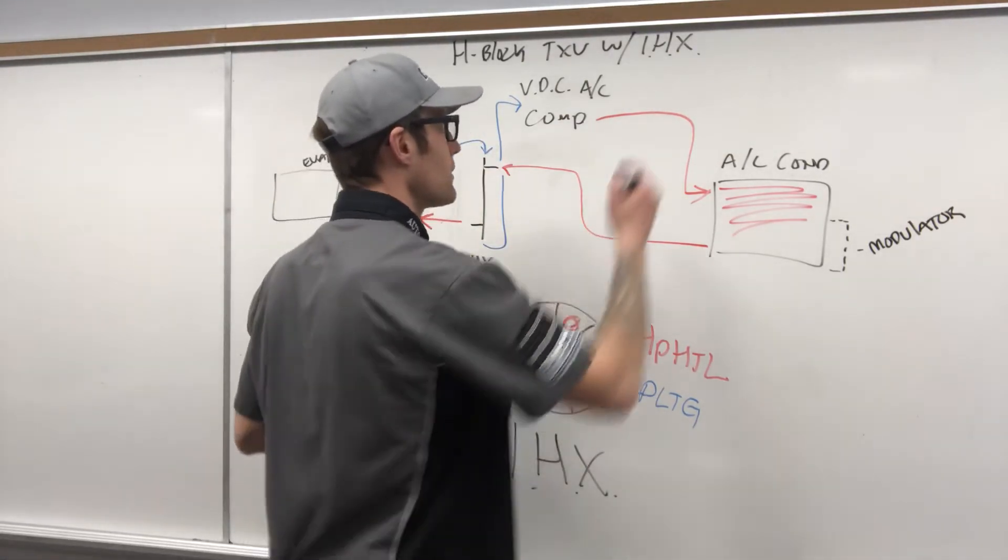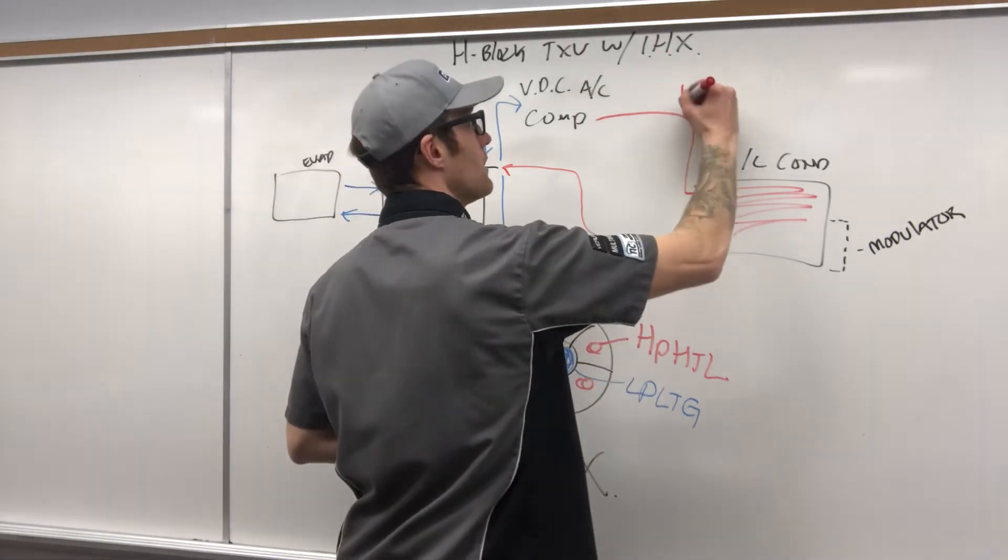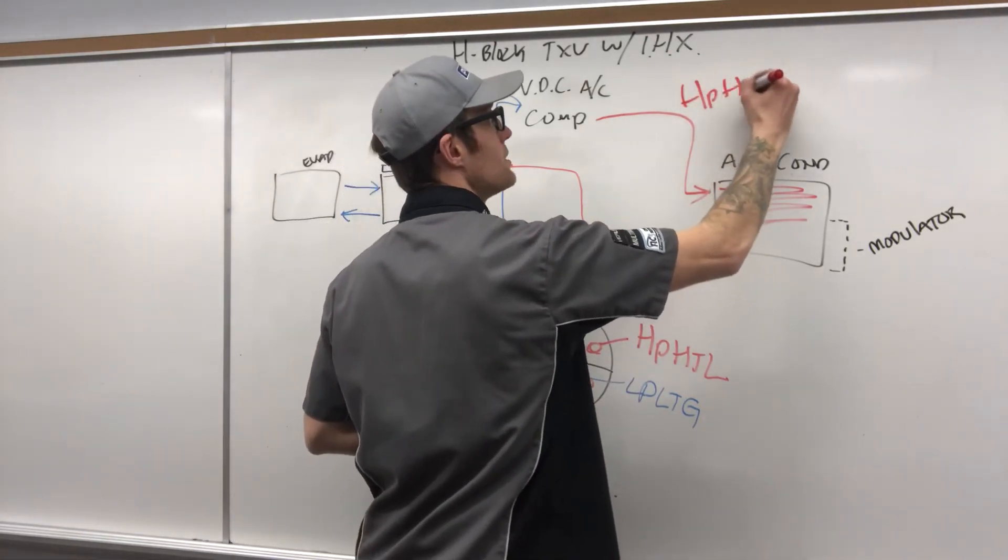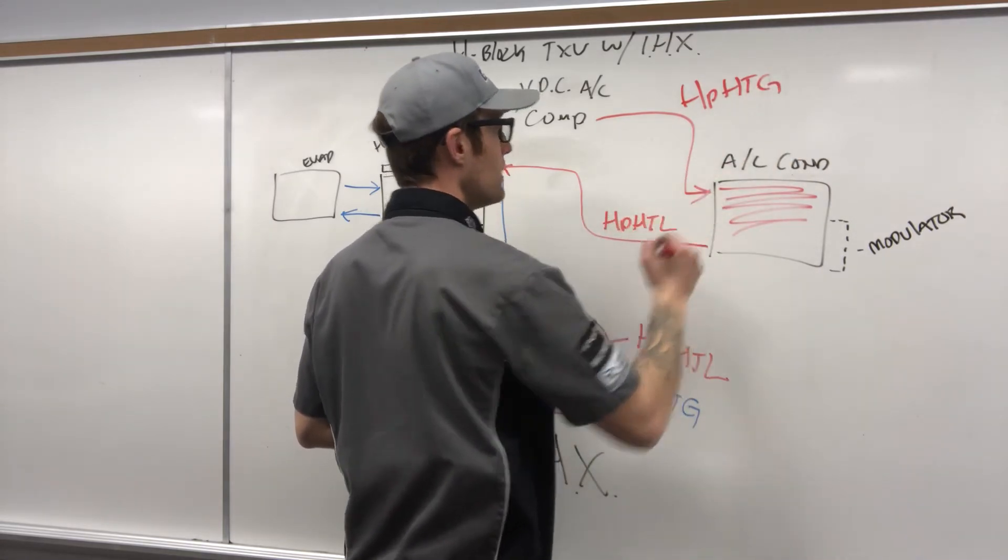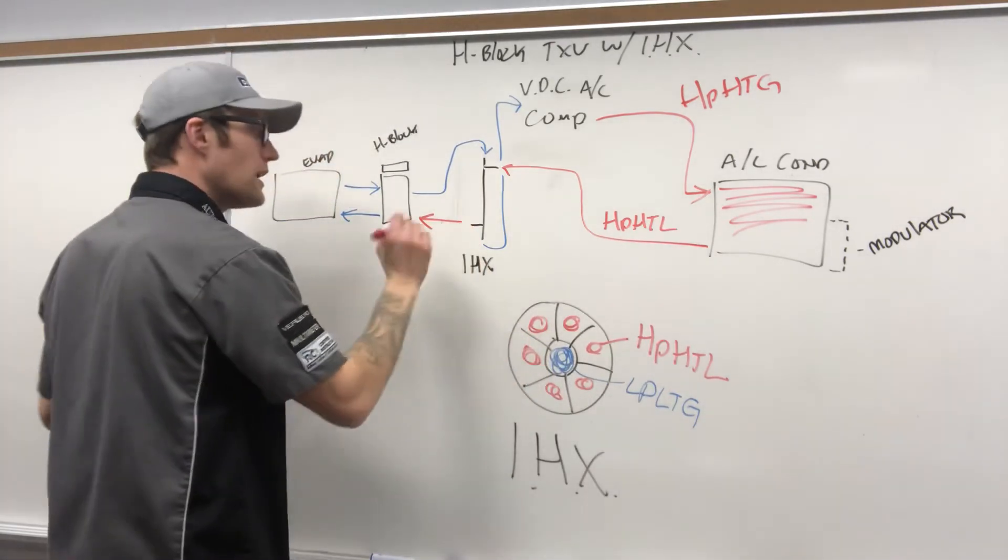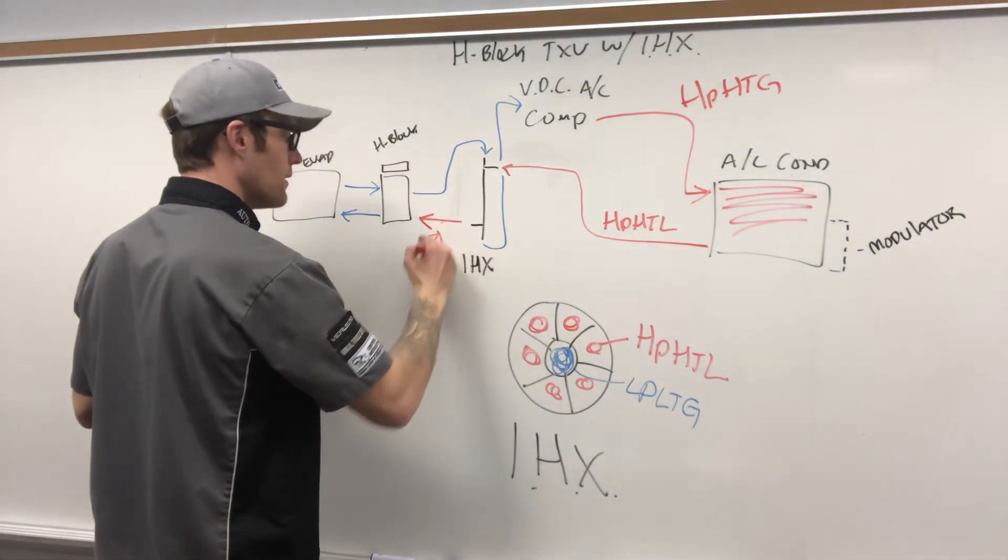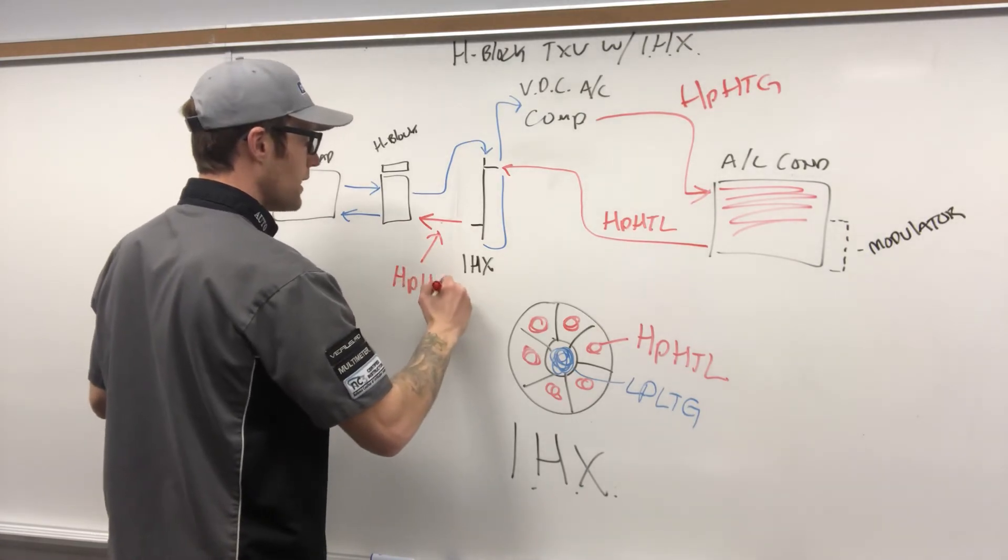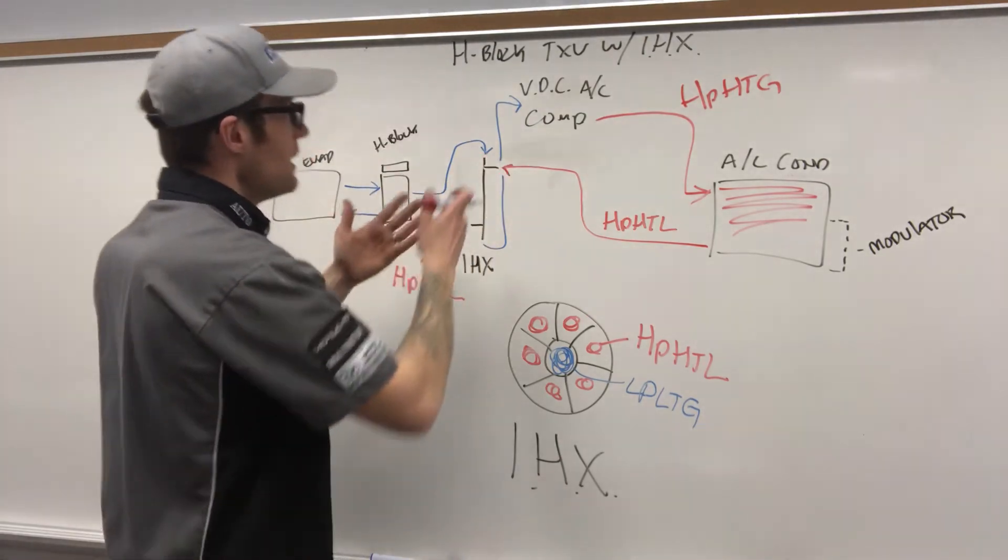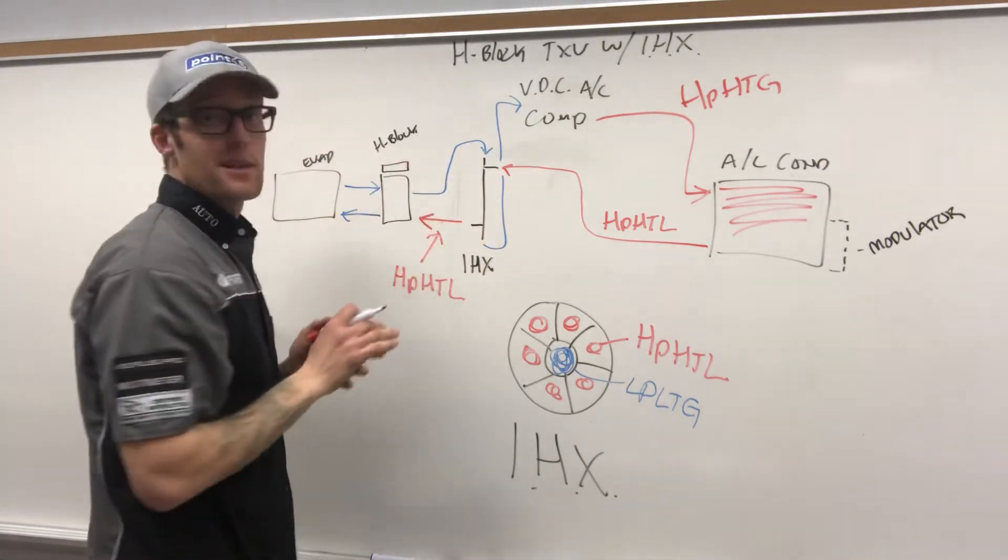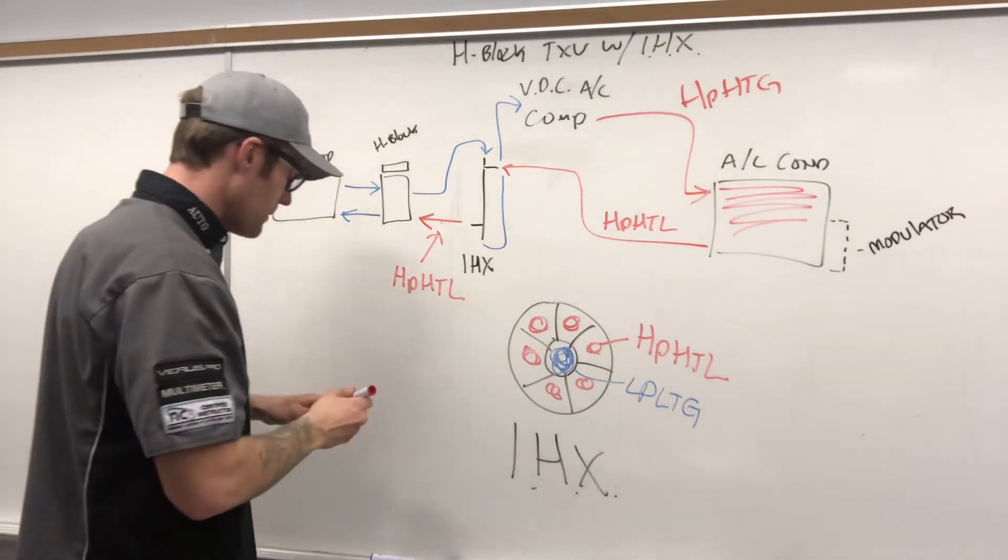Let's just finish this loop out really quick. This is not green, this is red. This will be your high pressure, high temperature gas, high pressure, high temperature liquid. We are cooled down some. We are still high pressure, high temperature liquid. We've cooled down an additional, I've seen in my measurements about 10 degrees cooler. That helps dramatically as far as the system being more efficient.